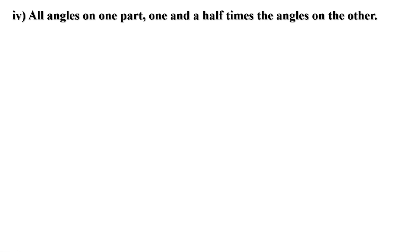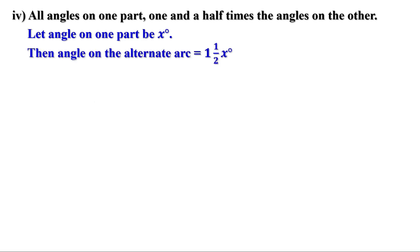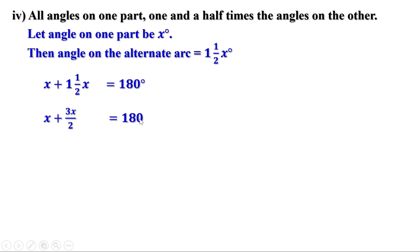Part four: all angles on one part are one and a half times the angles on the other. Let the angle on one part be x degrees. Then the angle on the other part is one and a half times x. We know the sum of angles on an arc and on its alternate arc is 180 degrees. Therefore x plus 1.5x equals 180 degrees. Since 1.5x equals 3x by 2, this becomes x plus 3x by 2 equals 180, and adding gives 5x by 2 equals 180.